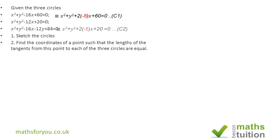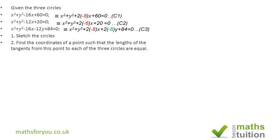The same approach applies for C2: instead of −12x we write 2(−6)x, making no difference at all. This format using the 2g and 2f notation makes it easier to identify the center of the circle and the radius.